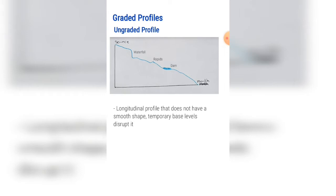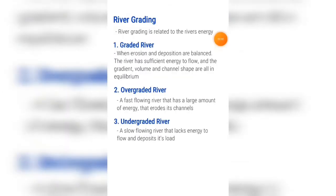Temporary base levels are disrupted in an ungraded profile. Temporary base levels are discussed in a previous video named river profiles. River grading is related to the river's energy and there are three types.